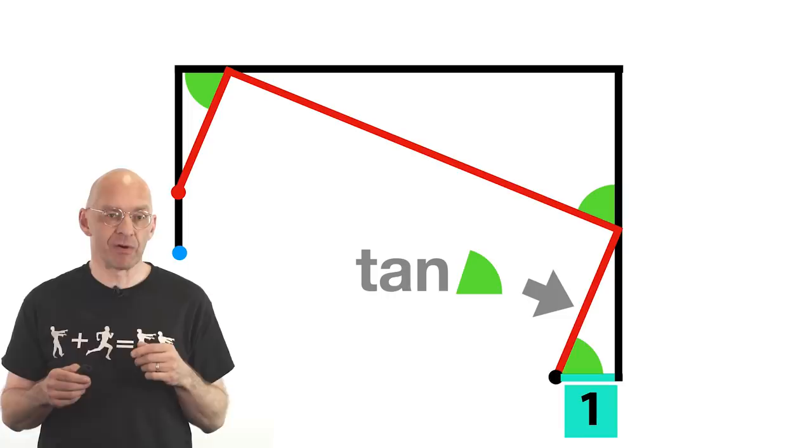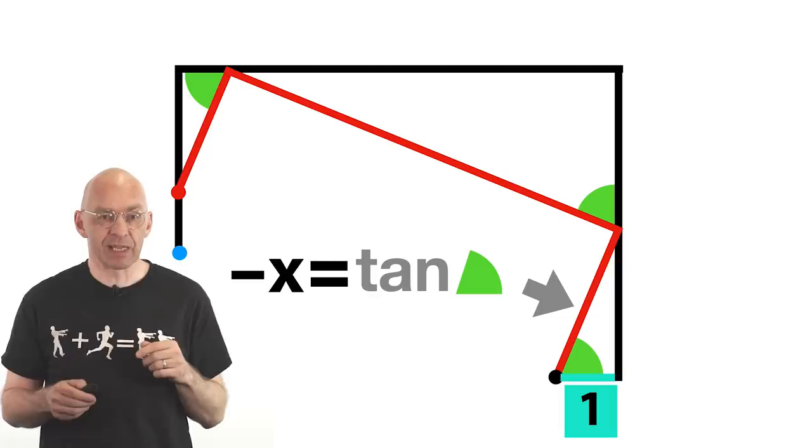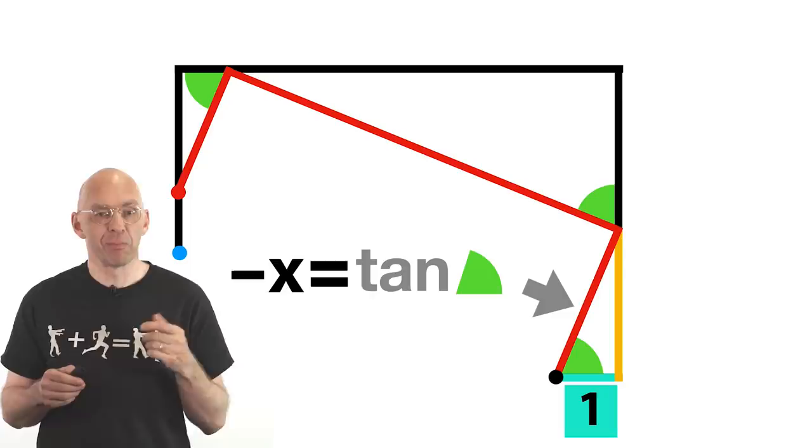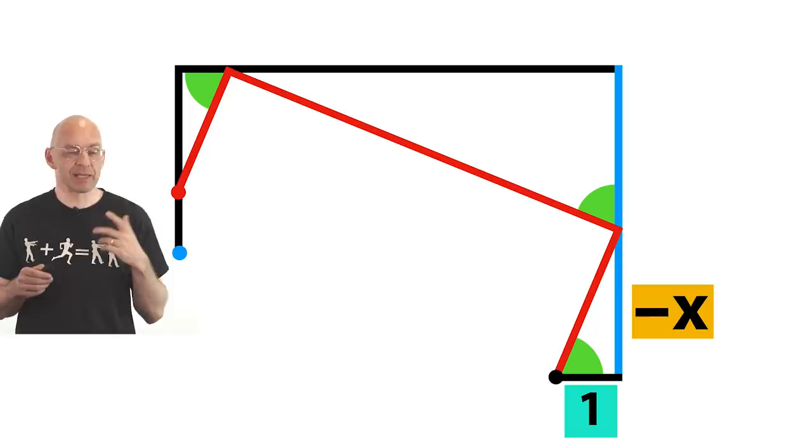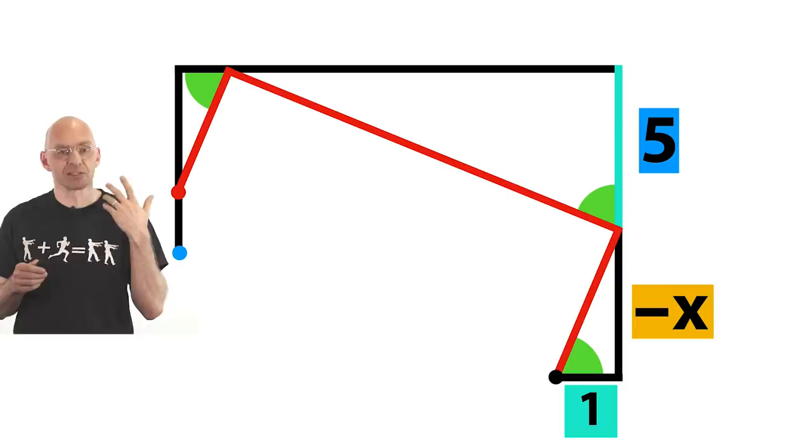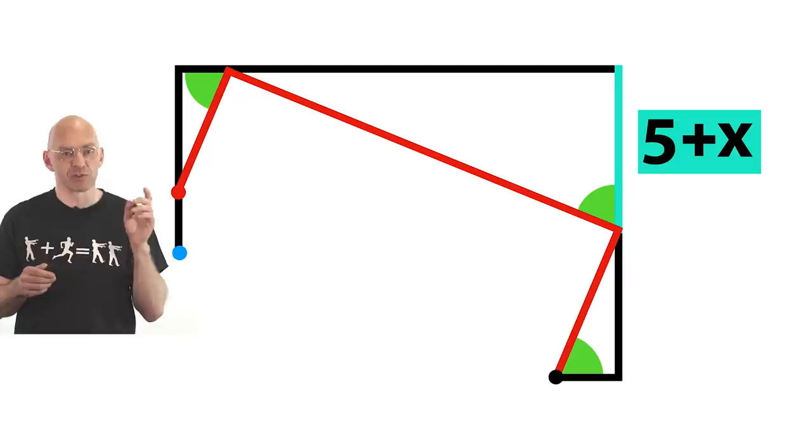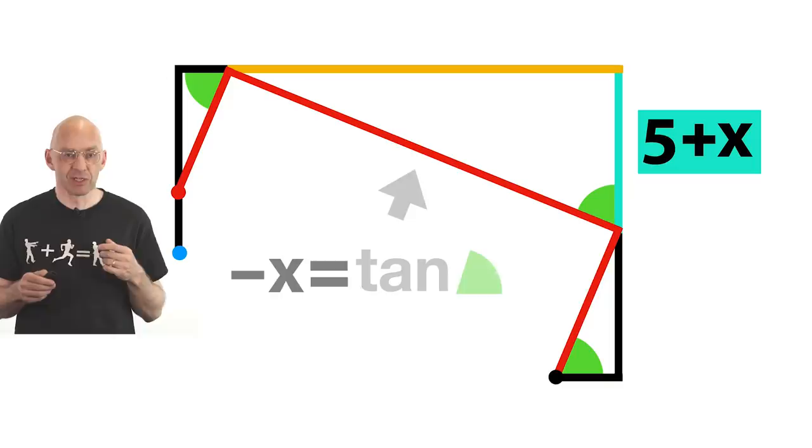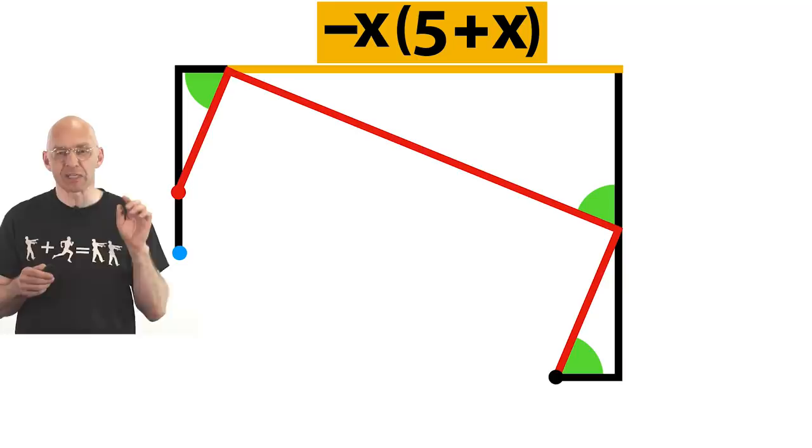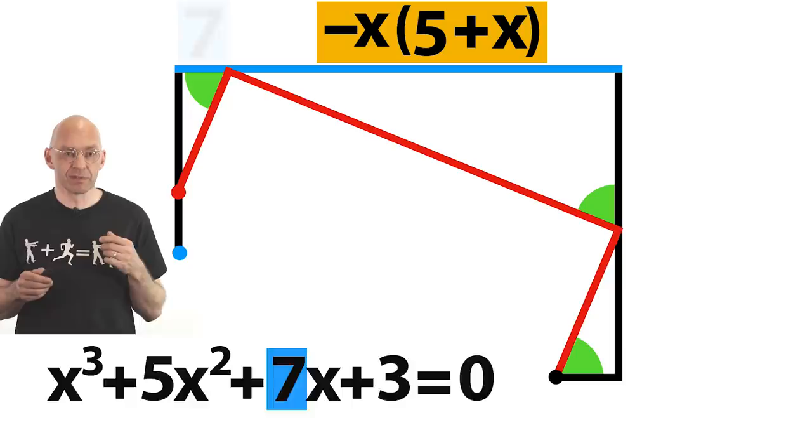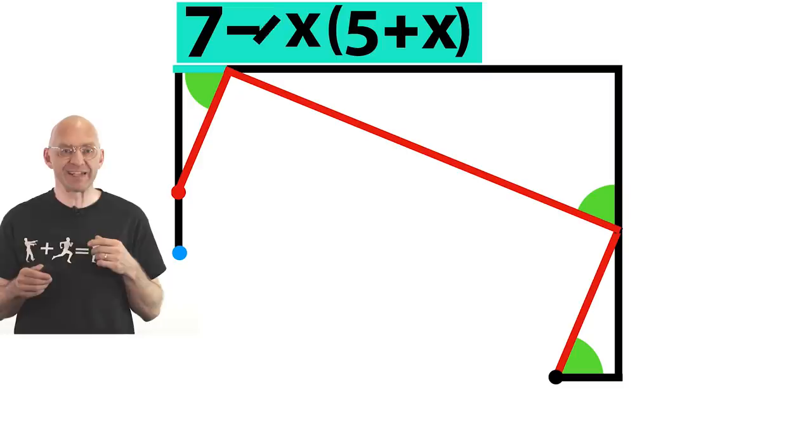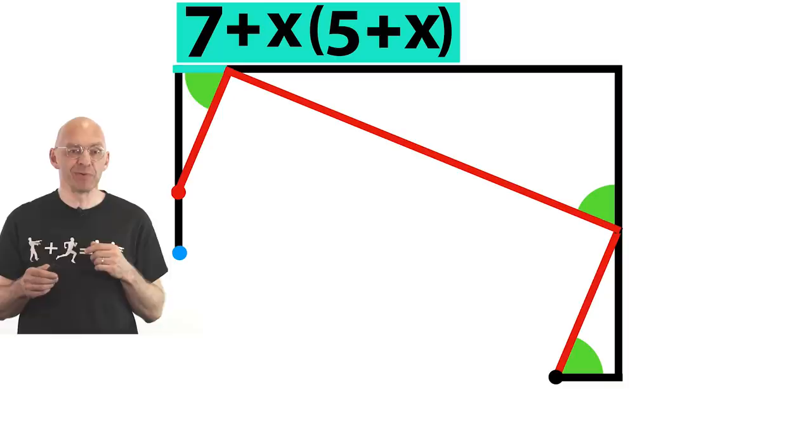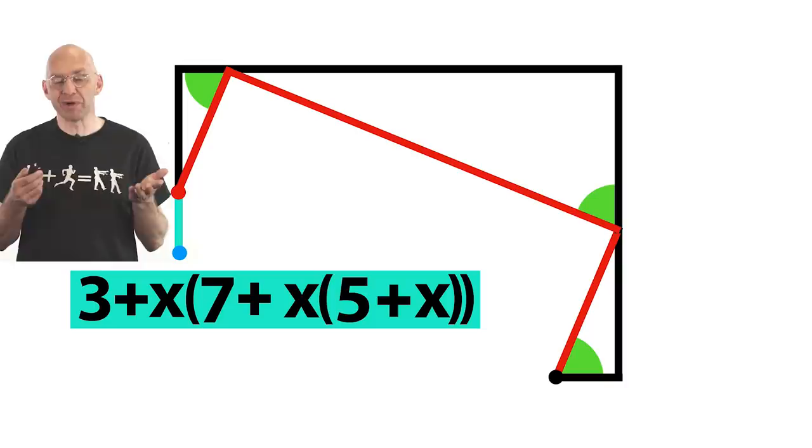And then minus that slope is the input x for our cubic polynomial. Now remember your Sokatoa. The length of this yellow segment is tan of the green angle times the aqua 1 which is minus x. Next, this blue side of the turtle path has length 5. Therefore this aqua segment has length 5 minus minus x. Now Sokatoa again. The next yellow segment has length tan of the green angle times 5 plus x which is this. The next blue segment of the turtle path has length 7. And so the next aqua segment is this long. Fancy, huh? Repeating this calculation one more time gives us the distance between the blue and red points.